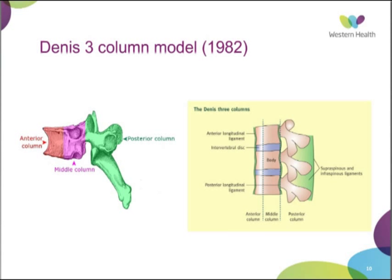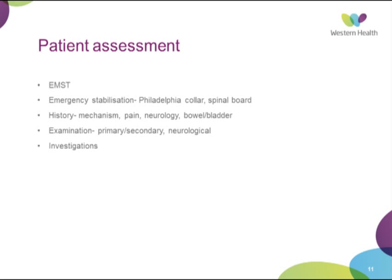Briefly on patient assessment: a lot of these patients are trauma patients, so you always approach them with your EMST principles. Emergency stabilisation by means of a hard collar and spinal board should be used. In terms of history, it's important to note the exact mechanism — if it's a traffic accident, the speed, whether they were in a seatbelt, etc. — as this helps determine fracture type. Note pain, neurological symptoms, and particularly bowel and bladder function. Examination includes your primary and tertiary survey with a heavy focus on neurological assessment.